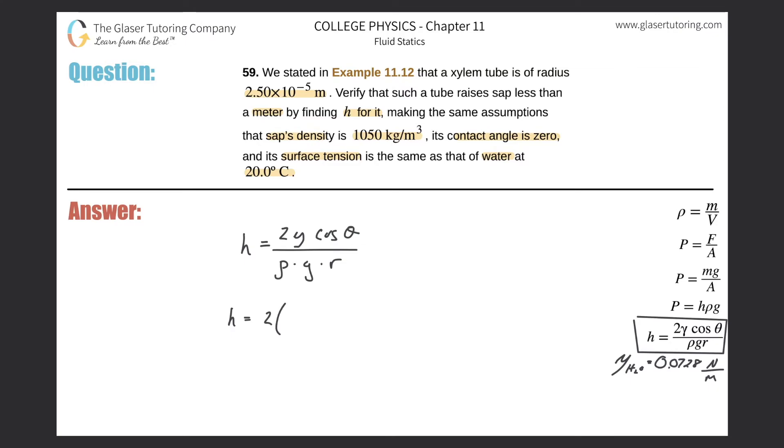Height would be equal to 2 multiplied by the surface tension 0.0728, multiplied by cosine of that contact angle, but that's zero. Cosine of zero we know is just one. The density then is 1050 as they told us in the problem, gravity is 9.8, and the radius was 2.5×10^-5.